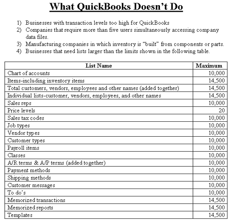Secondly, QuickBooks Enterprise Solutions, which was released in the summer of 2002, increases many of the maximums in the table and allows up to 10 simultaneous users. It will also handle manufacturing companies who build their inventory from components or parts. With QuickBooks Enterprise Solutions, looking at table lines 3 and 4, both of these limitations are doubled with the Enterprise Solutions. And this concludes this QuickBooks training video.